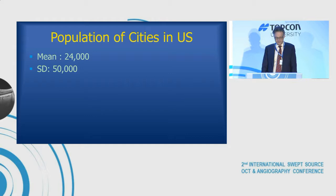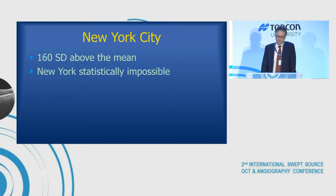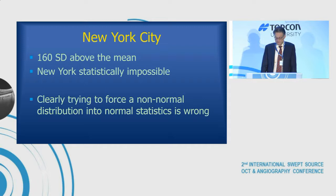So if we go back to our inferential statistics idea and look at two standard deviations, we get that 95% of cities fall somewhere between minus 76,000 and plus 124,000 people. But it's hard to figure out how you get a city with minus 76,000 people — that's because we're using the wrong kind of statistics. In addition, New York City would be 160 standard deviations above the mean, which means it's statistically impossible. We're trying to use statistics for a normal distribution on a non-normal distribution, and that's clearly wrong.